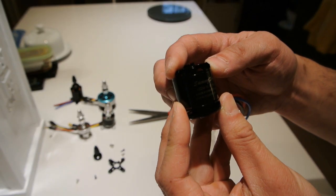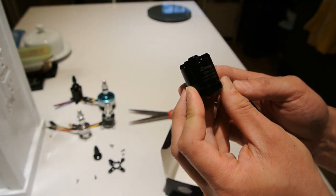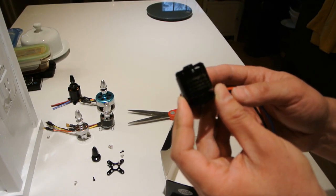So you can see on it, V2216. Probably can't see it on the camera too well, but it says V2216-11 KV900.